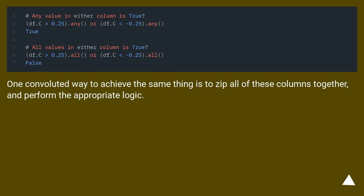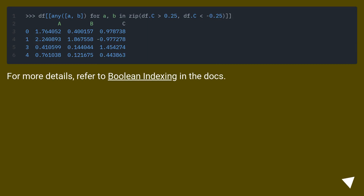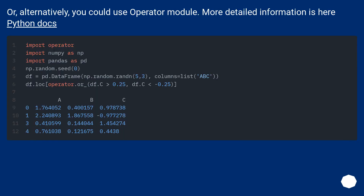One convoluted way to achieve the same thing is to zip all of these columns together and perform the appropriate logic. For more details, refer to boolean indexing in the docs. Or alternatively, you could use the operator module. More detailed information is available in the Python docs.